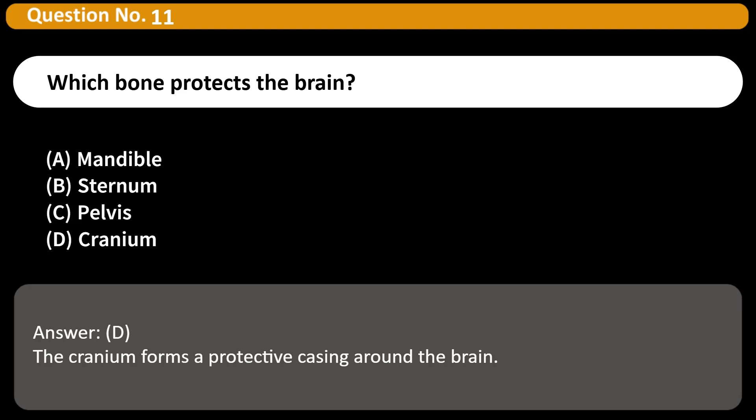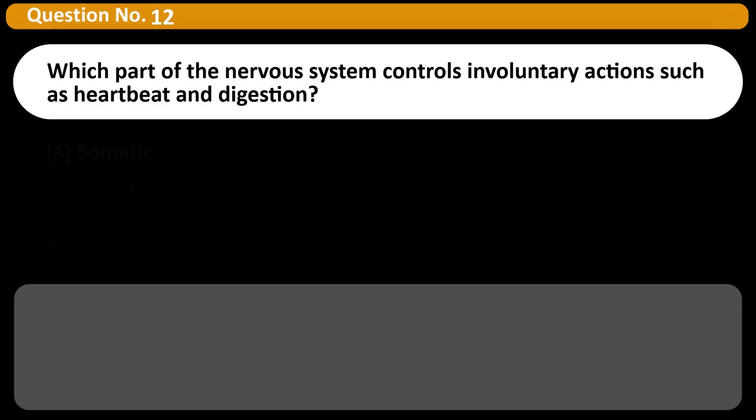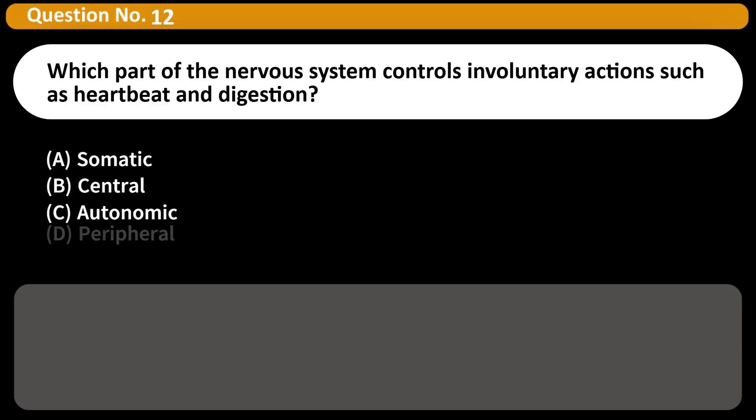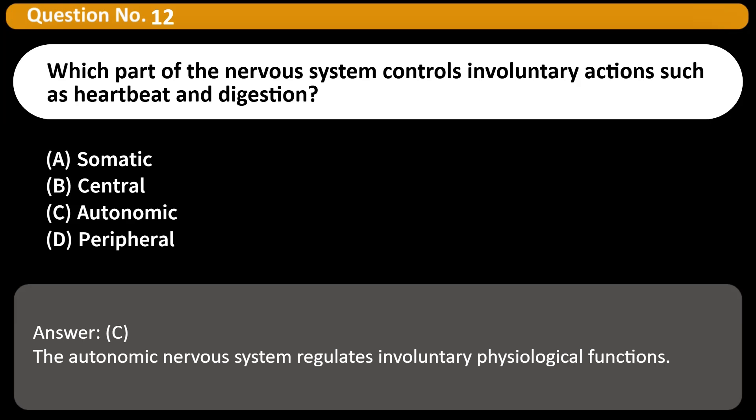Which part of the nervous system controls involuntary actions such as heartbeat and digestion? A) Somatic, B) Central, C) Autonomic, D) Peripheral. Answer: C. The autonomic nervous system regulates involuntary functions.